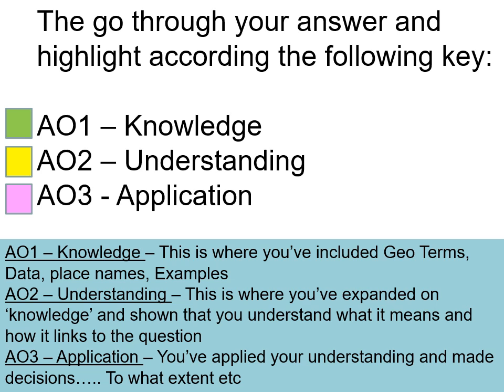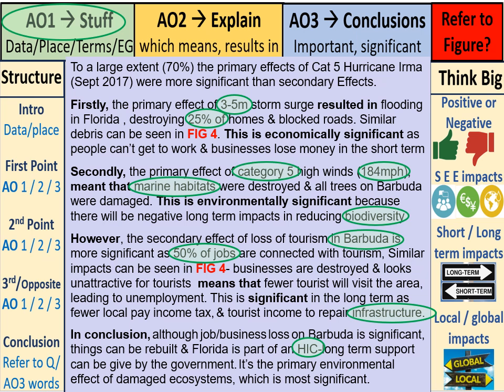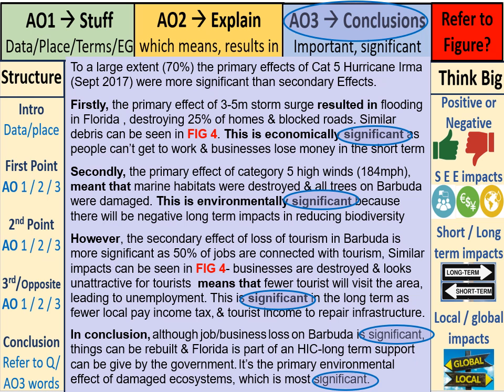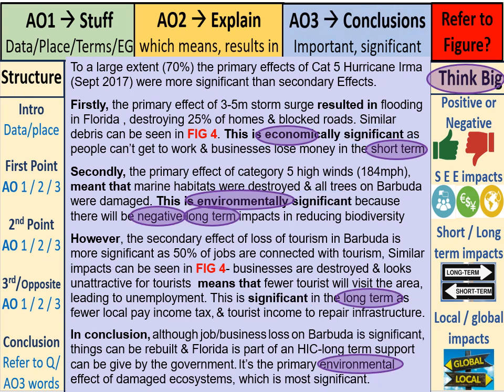Looking at the sample answer through the AO lens: AO1 includes data, place names, and geography words; AO2 uses 'which means that' to explain ideas; AO3 provides conclusions using the word 'significant' throughout because that's the word in the question. Also include 'think bigs' — positives/negatives, social/economic/environmental, short-term/long-term. Local and global weren't needed here as the hurricane was in a very localized area.